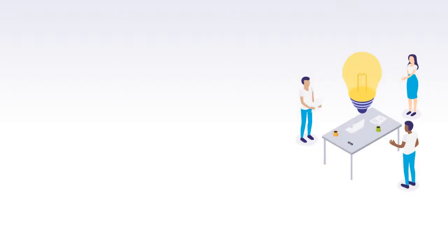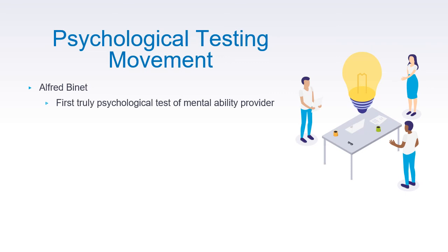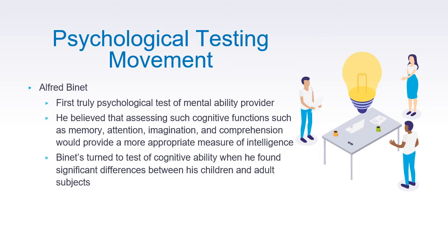Alfred Binet is the first truly psychological test of mental ability provider. He believed that assessing cognitive functions such as memory, attention, imagination, and comprehension would provide a more appropriate measure of intelligence. Binet refined his test of cognitive ability when he found significant differences between his children and his adult subjects — discovering key differences between a child and an adult.